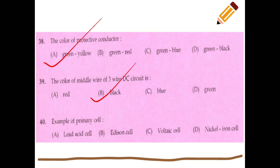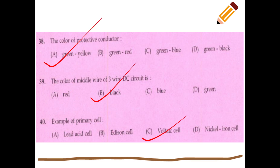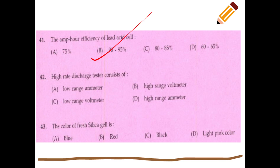An example of a primary cell is an old-type (Leclanche) cell. The ampere-hour efficiency of a lead-acid cell is 90 to 95%.